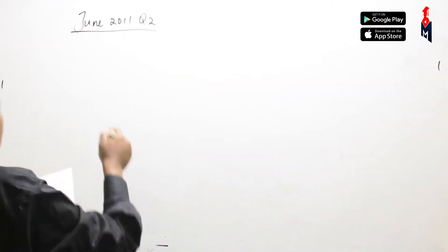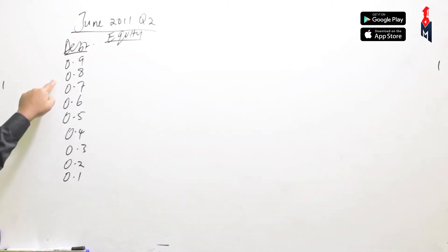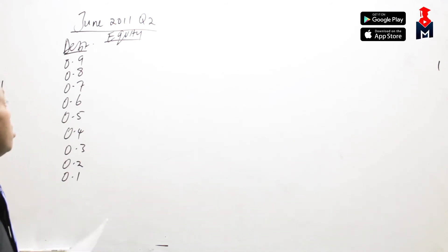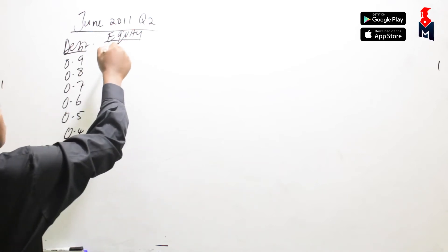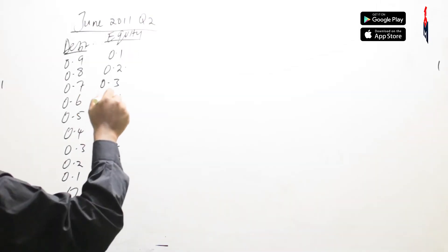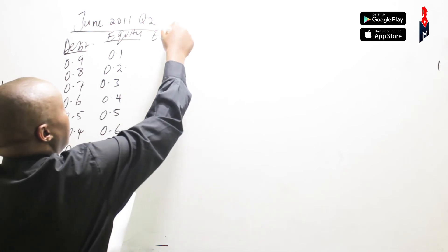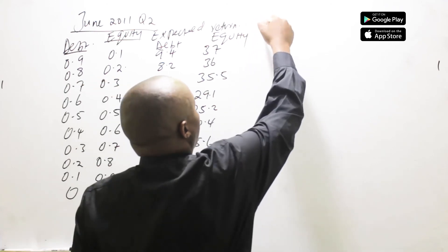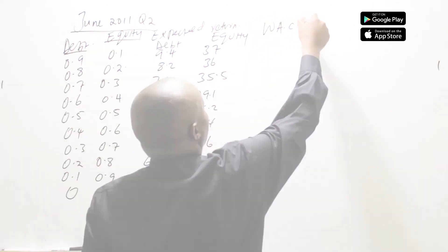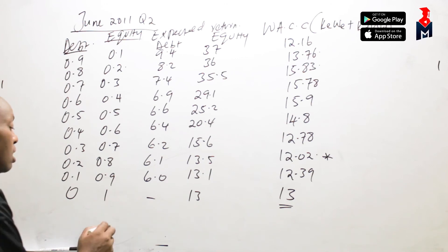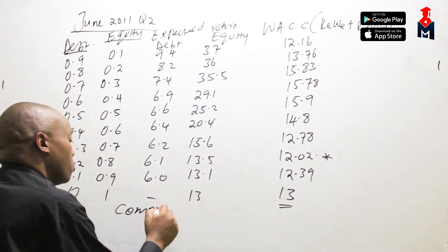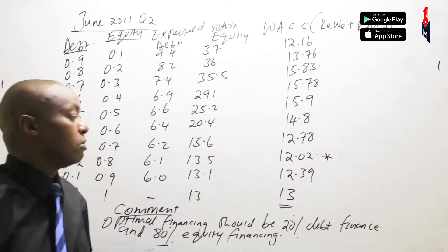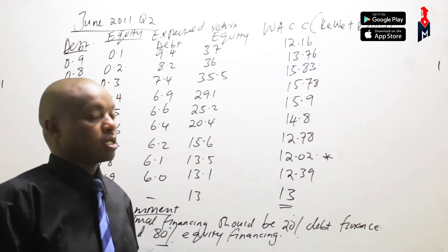In the first case, you have debt. On the assumption that the only two sources of funds is debt and equity, it would mean that the balance of 10% is financed by equity. Consider the expected return — you determine the weighted average cost of capital and 20% debt financing. And that is how you make capital structure decisions using the Modigliani and Miller model without taxes.